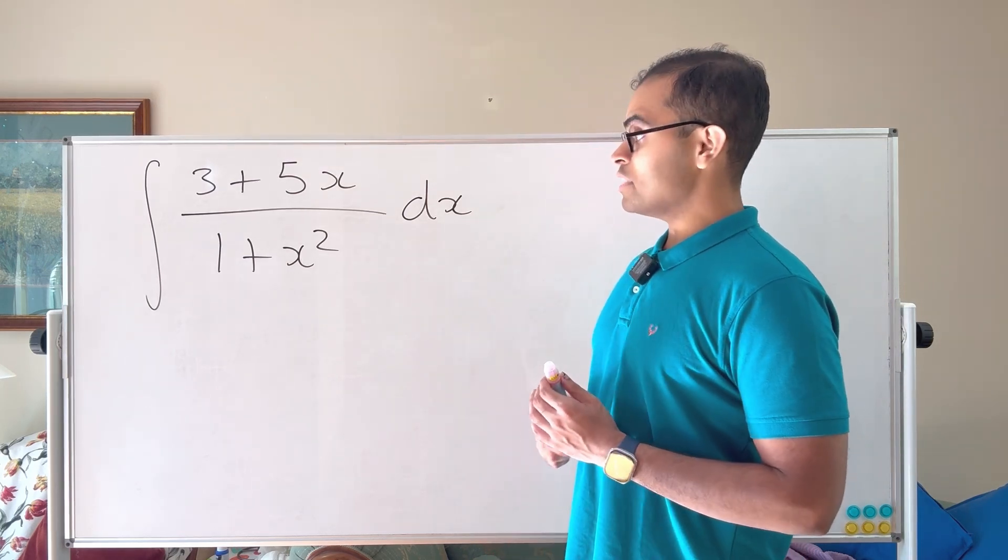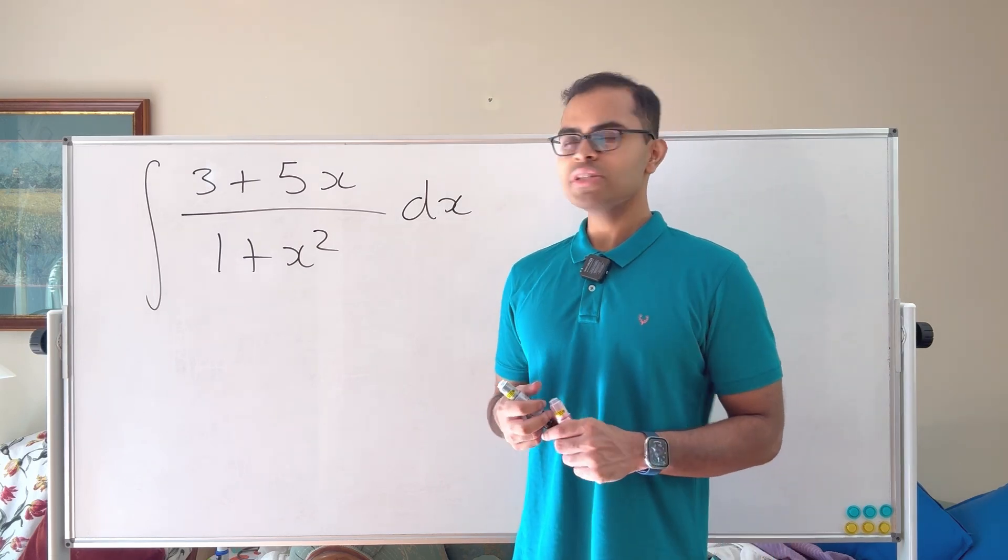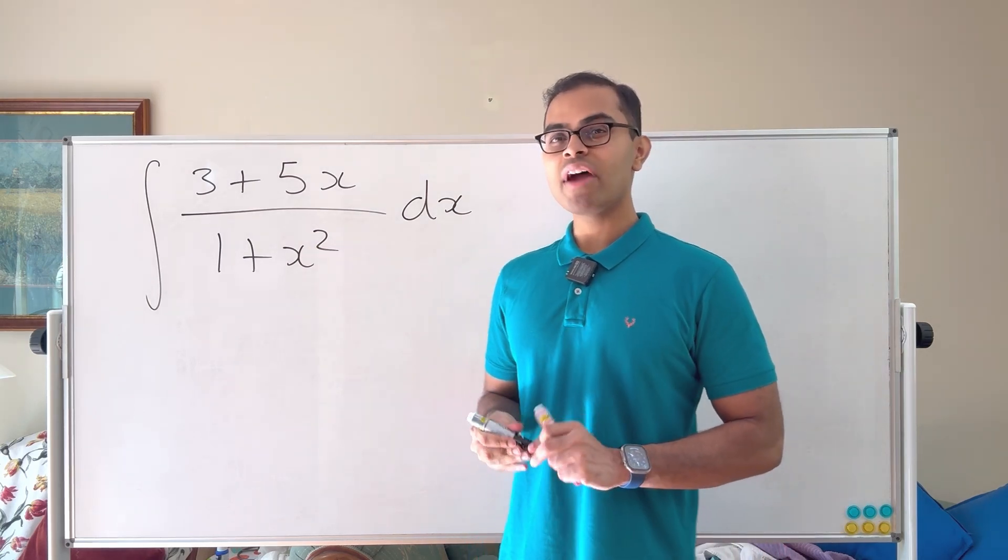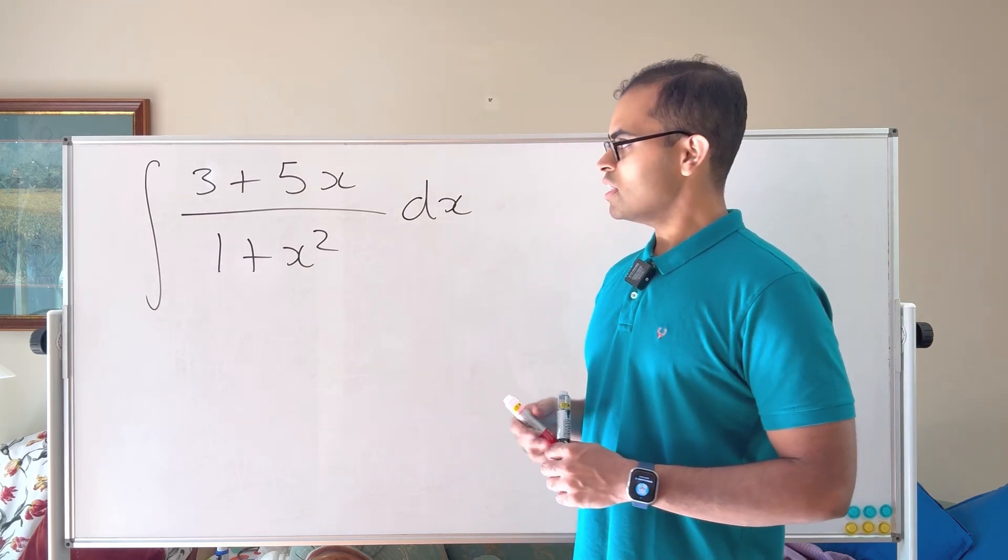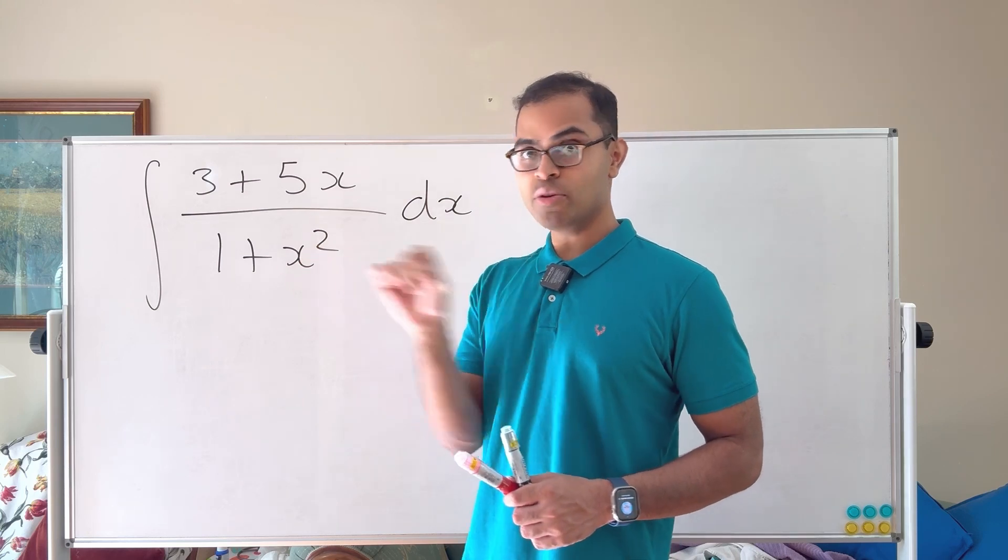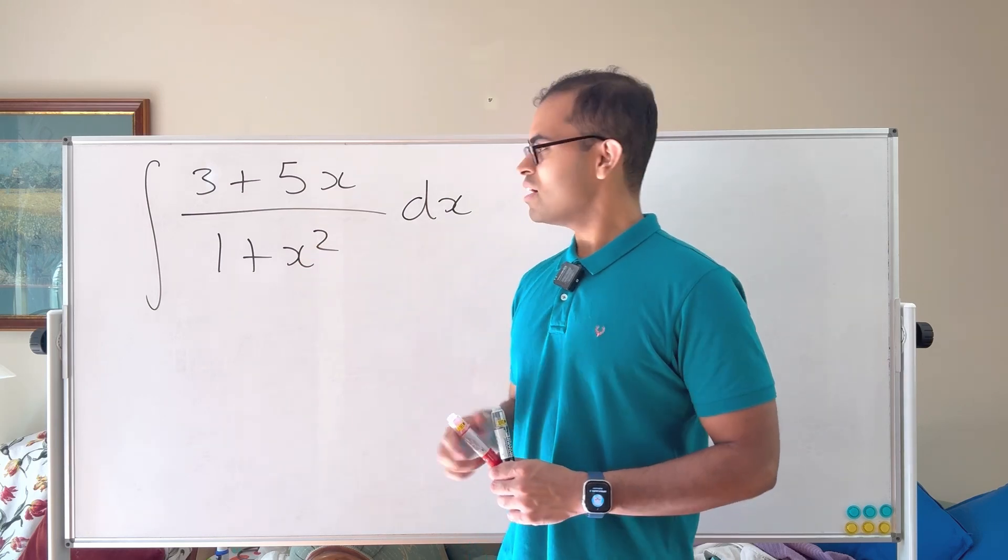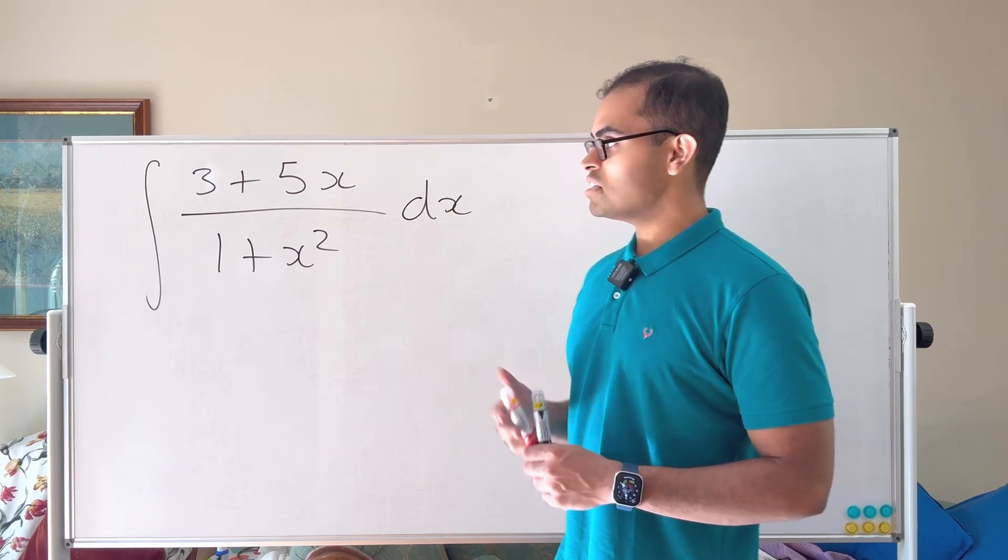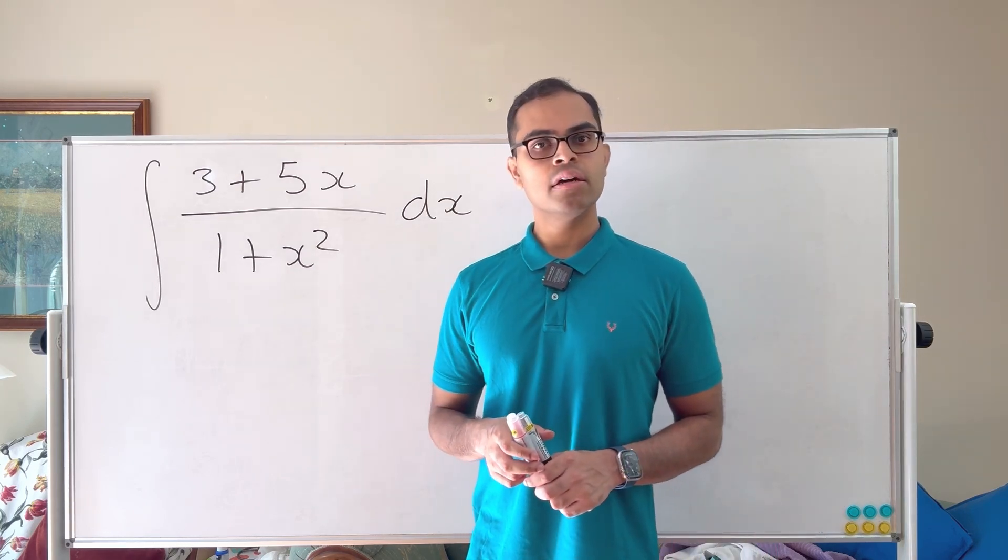So typically what I like to do in these problems is think about, okay, 1 plus x squared is in the denominator. It's very difficult to simplify a denominator, because if it's in the numerator, you can write out a sum of fractions by adding up the numerators if you have a common denominator. Can't really do that for the denominator. So a good thing to try is to set u equals 1 plus x squared. So let's try that.